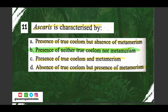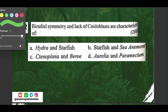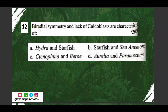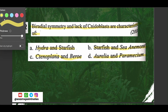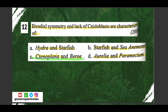Question number twelve: radial symmetry and lack of nidoblasts are characteristic of — A) Hydra and starfish, B) starfish and sea anemone, C) Ctenoplana and Beroe, D) Aurelia and Paramecium. The correct option is option C, Ctenoplana and Beroe.